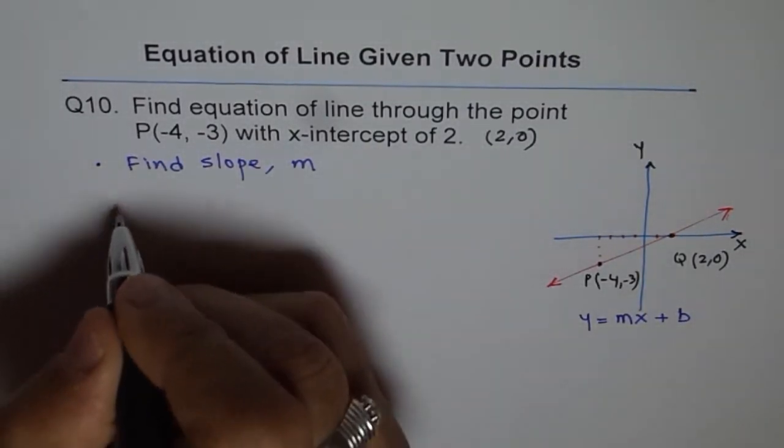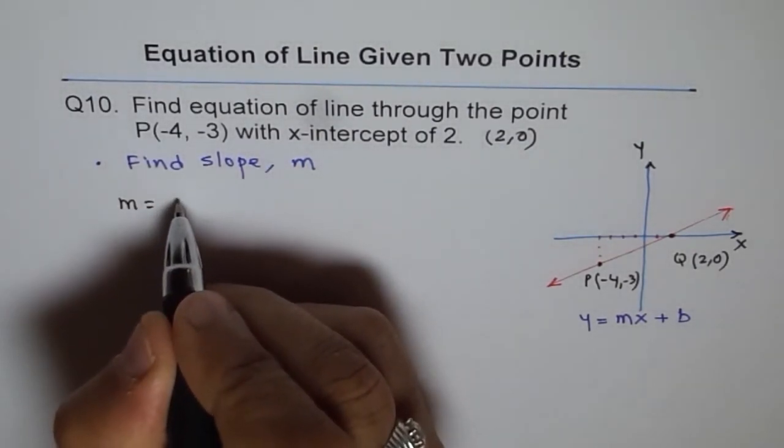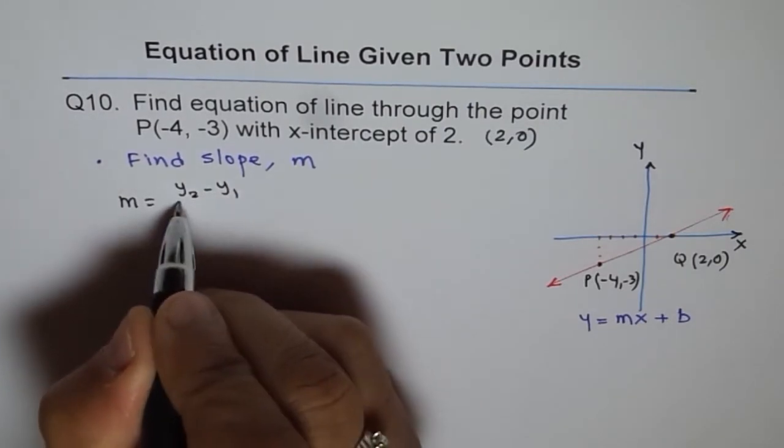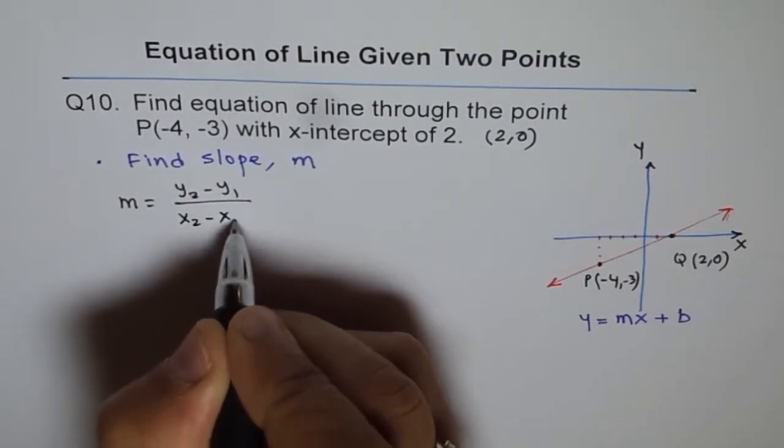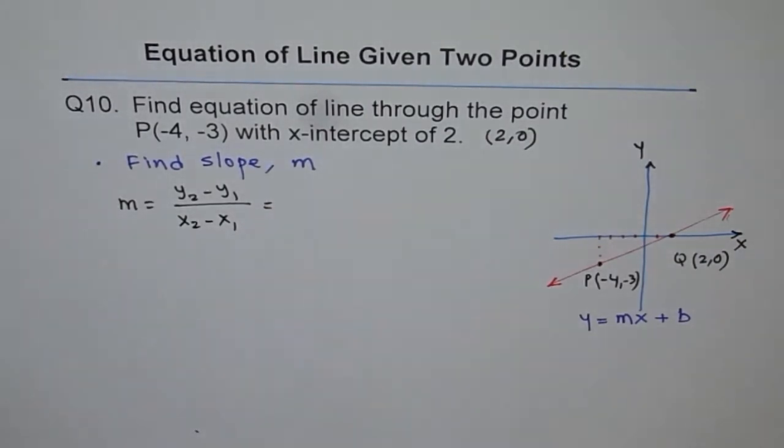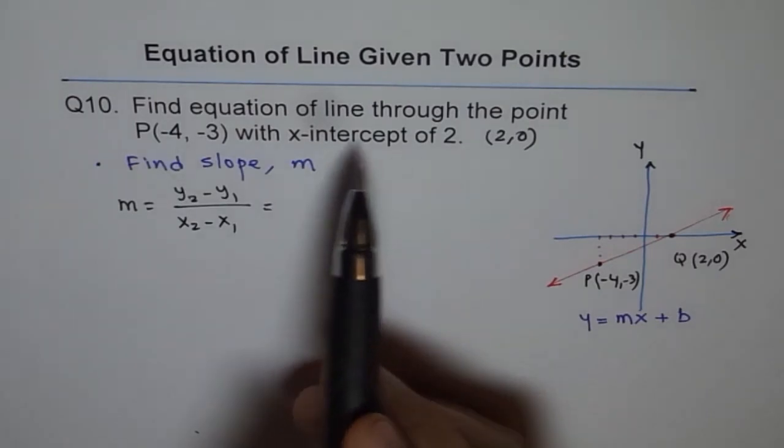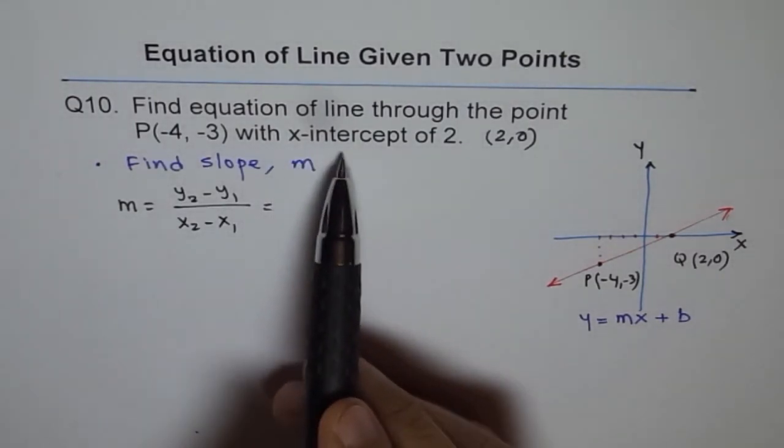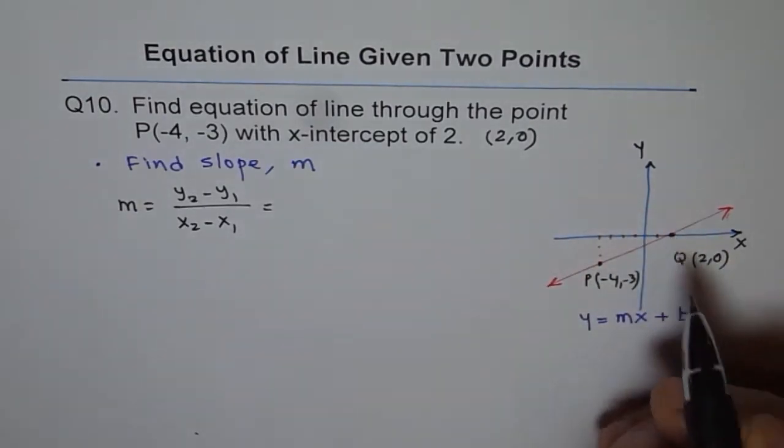So we said m is equal to rise over run, which is y2 minus y1 change in y divided by x2 minus x1 change in x. So as I said, P and Q, let's call this point as Q, the x-intercept. And since the x-intercept is 2, y value is 0, which we saw here.